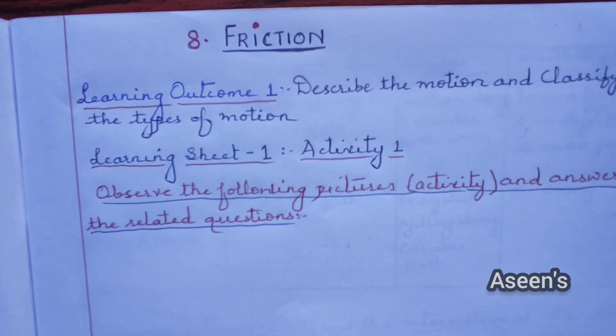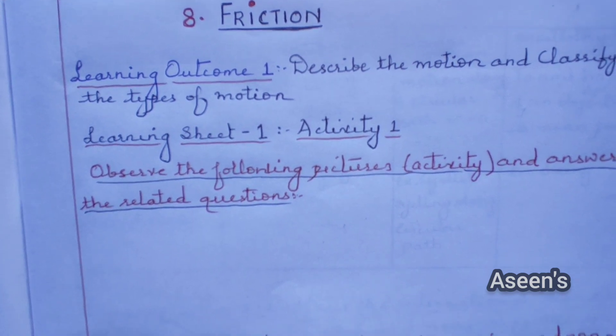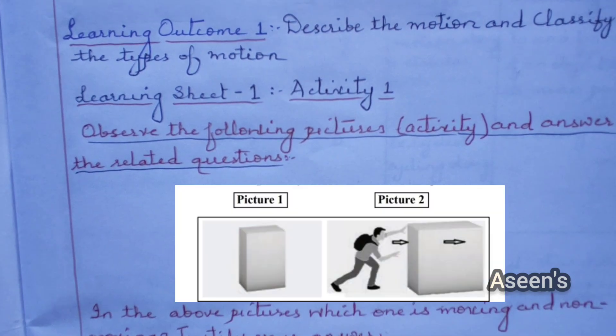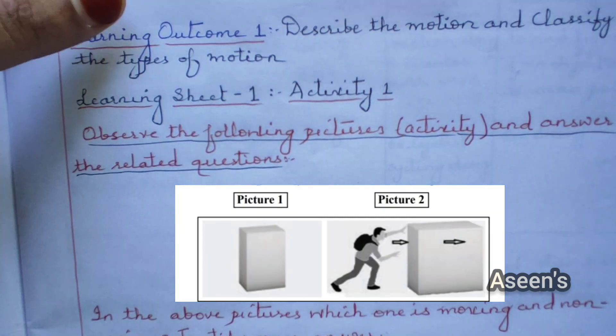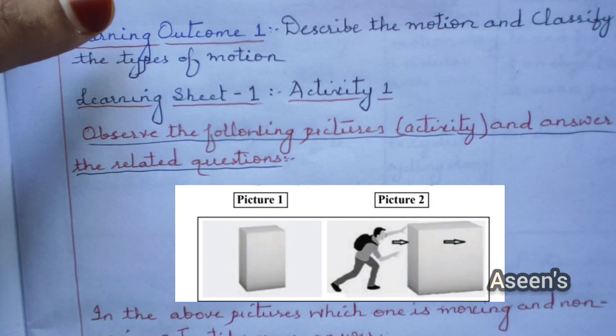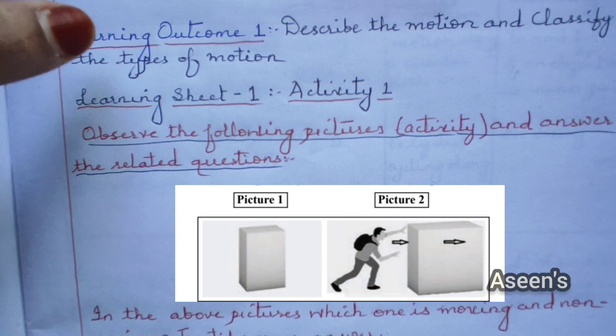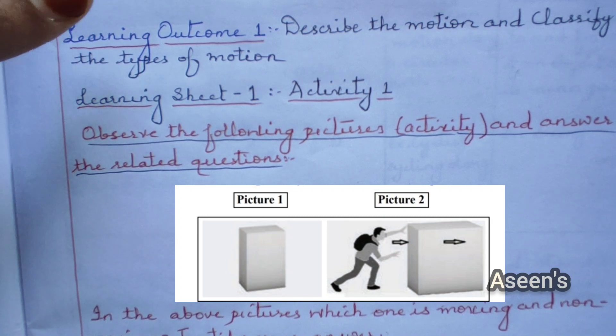Without further delay let's get started. Under learning outcome 1, we are going to be able to describe motion and classify the types of motion.